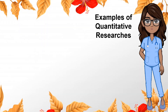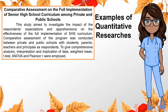Moving on, here are examples of quantitative research. First, Comparative Assessment on the Full Implementation of Senior High School Curriculum Among Private and Public Schools. This study aimed to investigate the impact of respondents' expectations and apprehensions on the effectiveness of the full implementation of the senior high school curriculum. The assessment was conducted between private and public schools with students, parents, teachers, and principals as respondents. To give comprehensive analysis, interpretation, and implication of data, weighted mean, t-test, ANOVA, and Pearson R were employed.